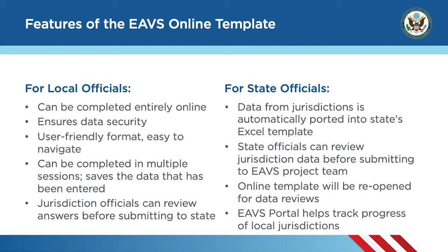The online template also has features that state officials really like. The online template and Excel templates work together seamlessly. When a local jurisdiction submits their online template, the data is ported directly into your state's Excel template, so there's no need to copy or paste anything manually. You can review the jurisdiction submissions in the Excel template before you submit your data to the EAVS project team. When it comes time to finalize your state's data submission in February 2021 — as a reminder, data is due on February 1st — your jurisdiction's online surveys will be unlocked so they can go back in and make any necessary data corrections.